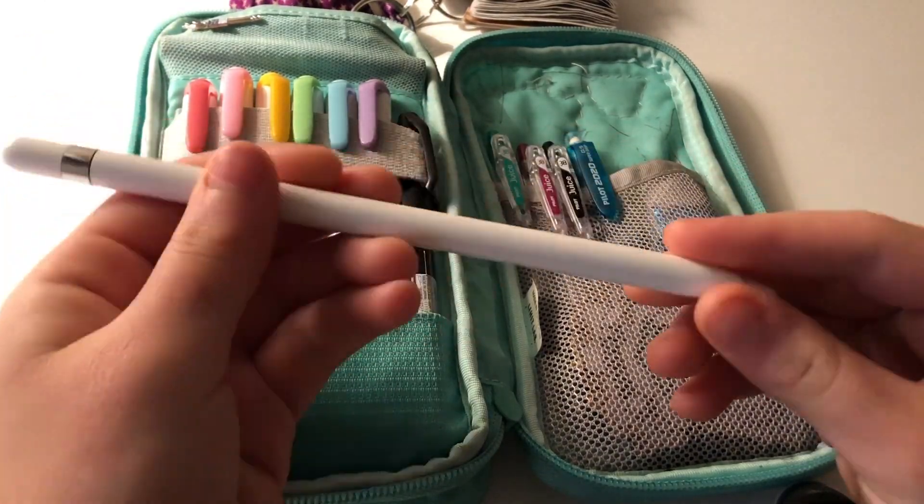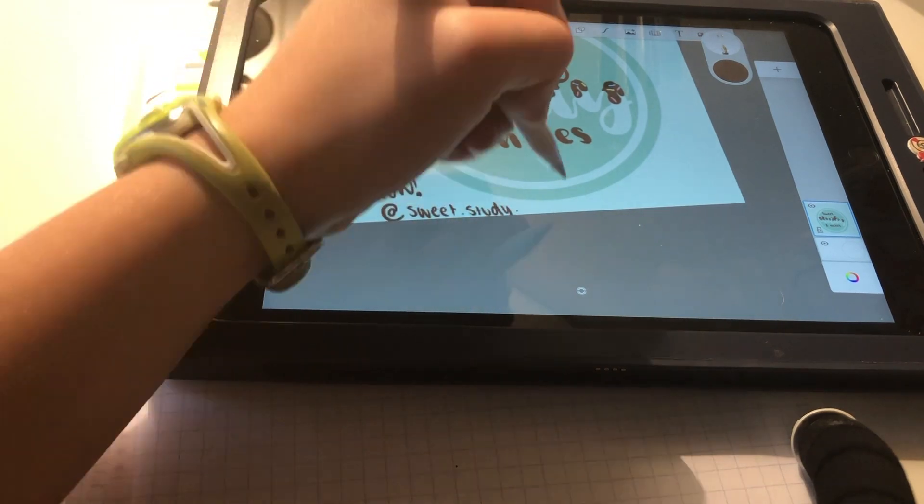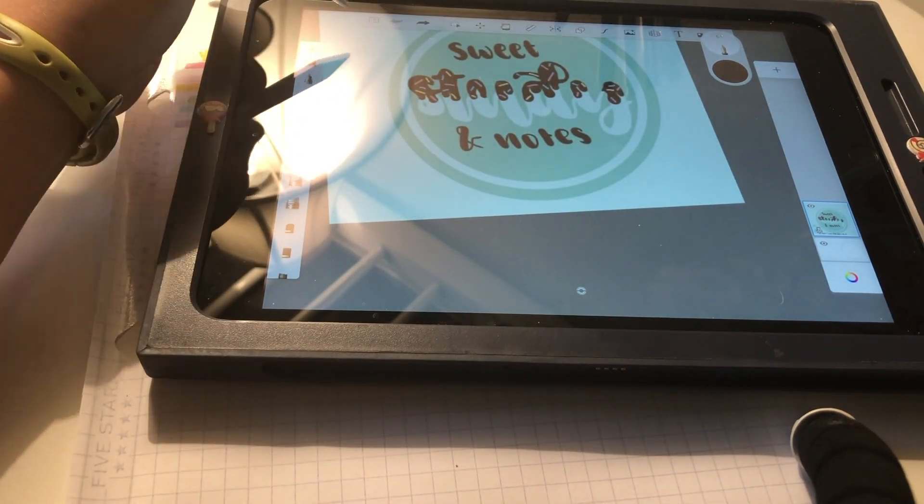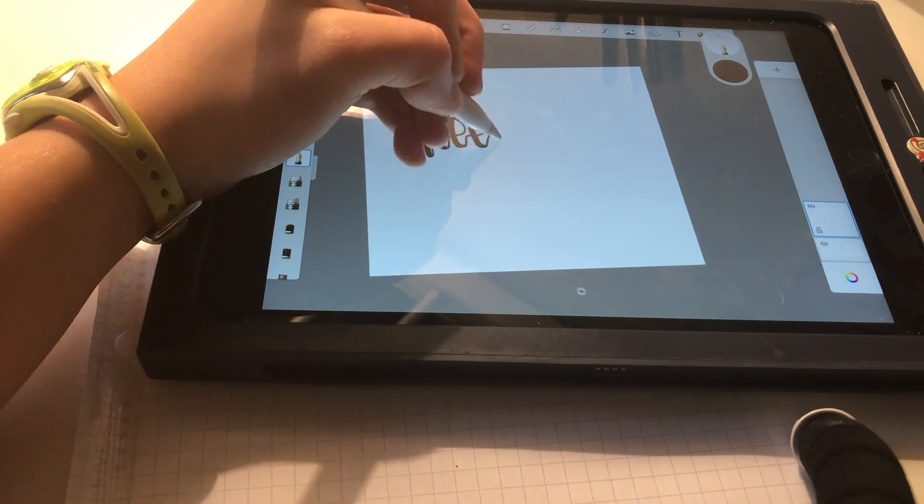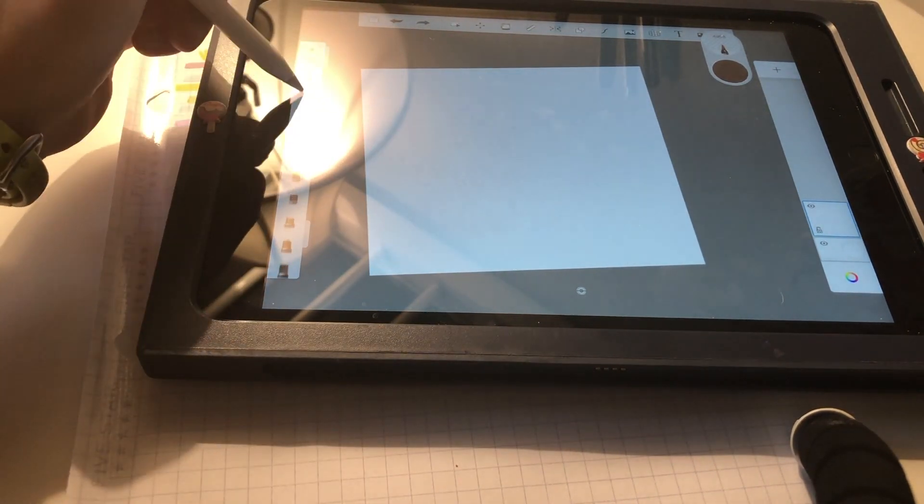Next is my Apple Pencil. I usually use it at home but sometimes at school. I recently started a studygram, which I've linked in the description. I also use my Apple Pencil to design stickers for my Redbubble shop. I'll link that too if you want to buy some stickers or notebooks.